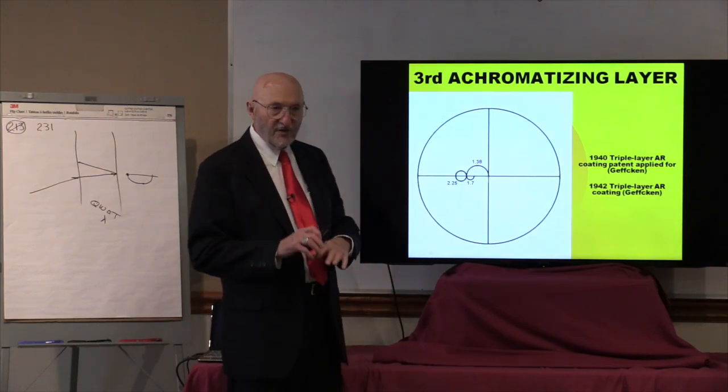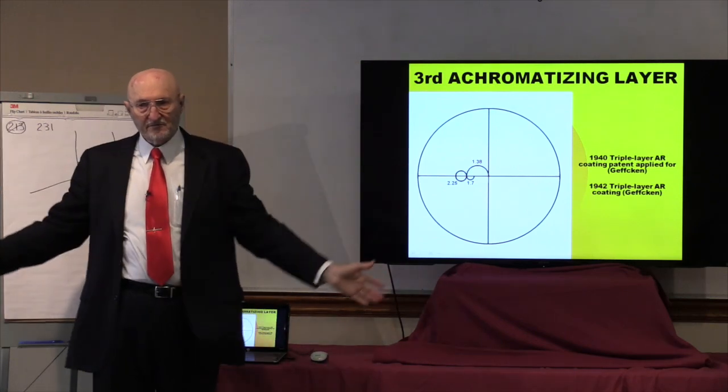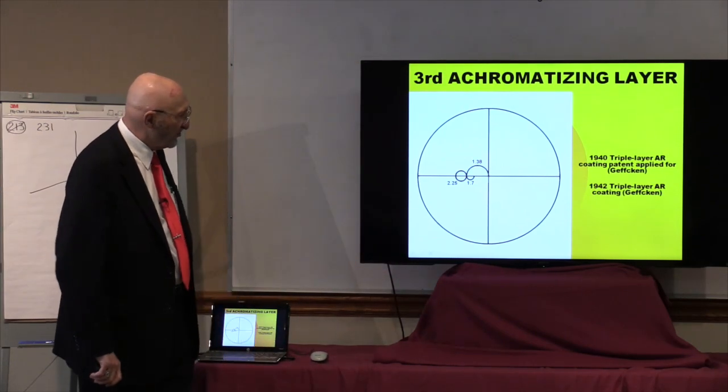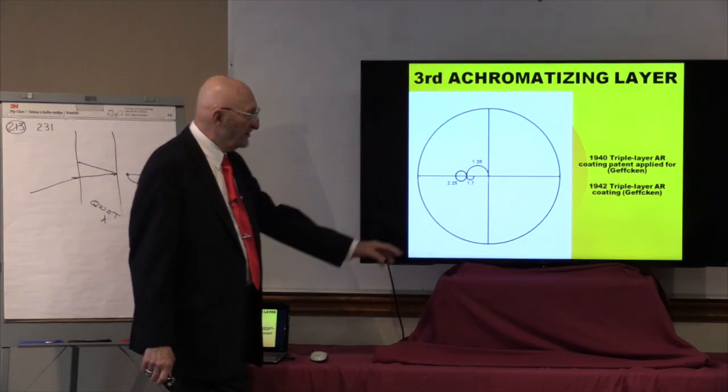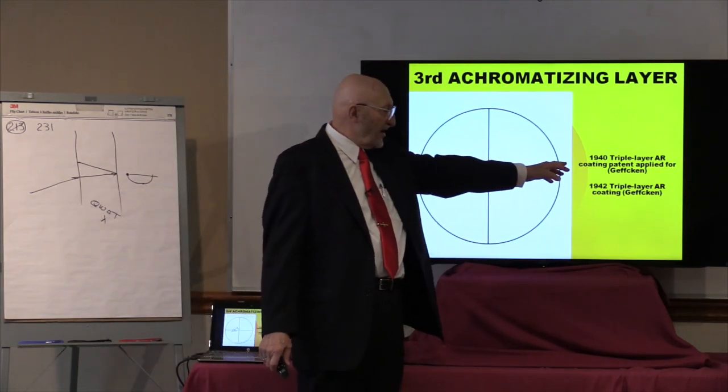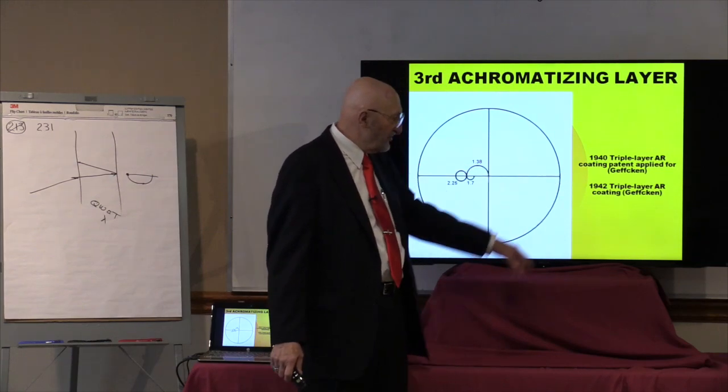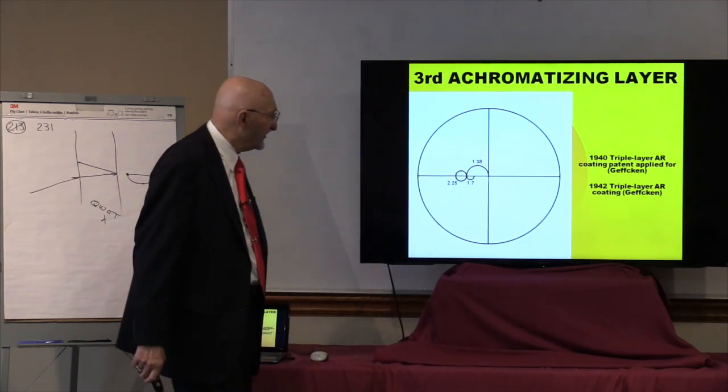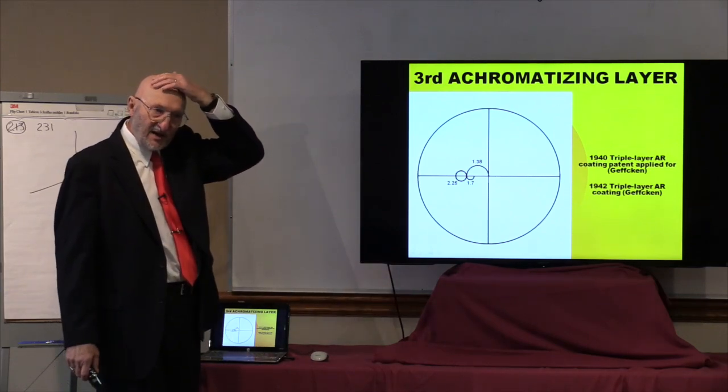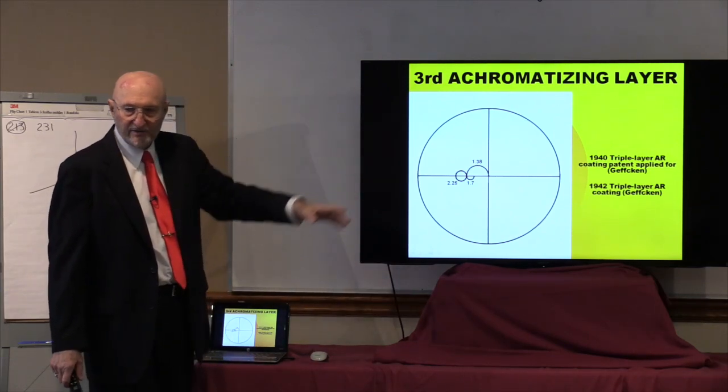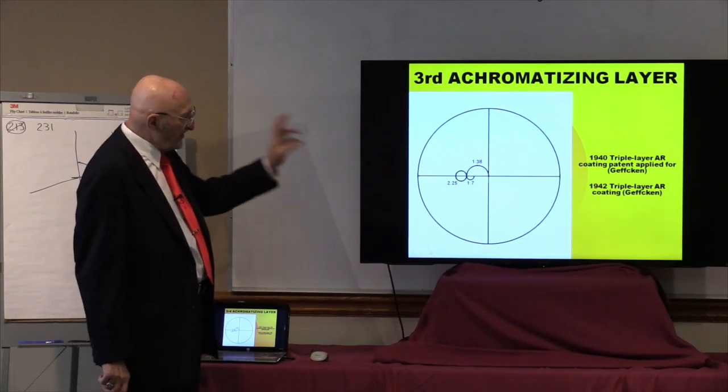But this has a wonderful effect of flattening out the coating, so it's no longer a V-coat, it's a broadband. And this triple air coating, the patent was applied for by Geffkin in 1940. So this is what's called the achromatizing layer—it gets rid of the color, achromatizing. That is the basis of broadband anti-reflection coatings.